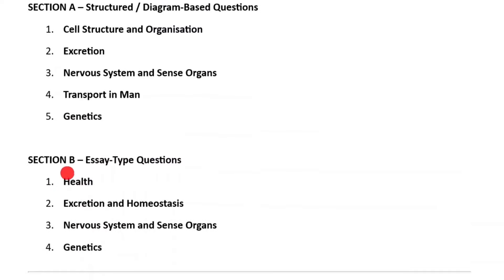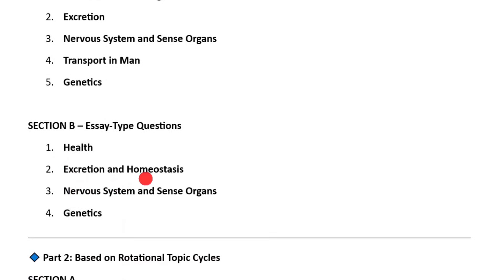Moving to Section B — essay-type questions — these have been consistently appearing from 2020 to 2024: number one, health; number two, excretion and homeostasis; number three, nervous system and sensory organs; and number four, genetics. Of course, these topics have subtopics inside, which is why you need the topic-by-topic revision to see how to revise everything.